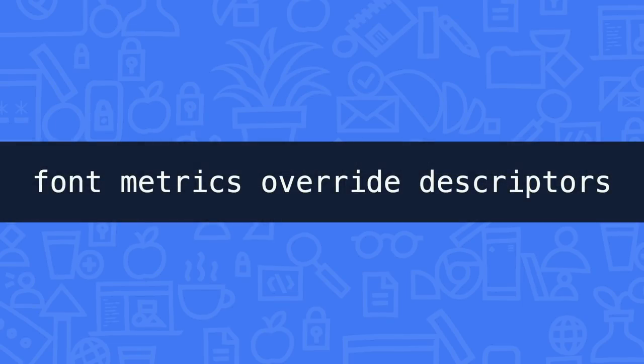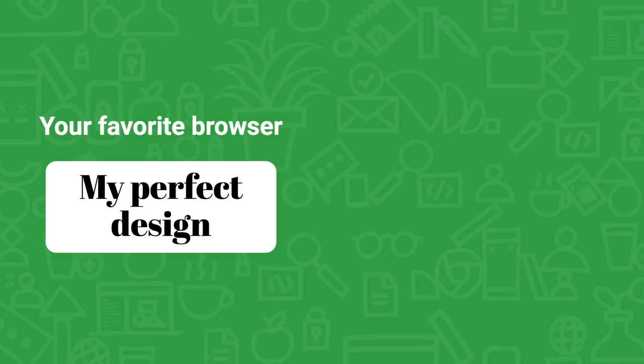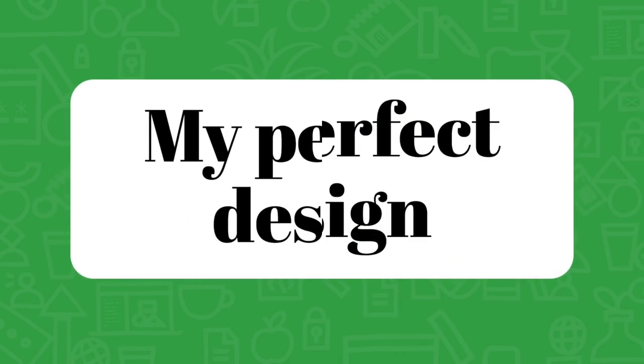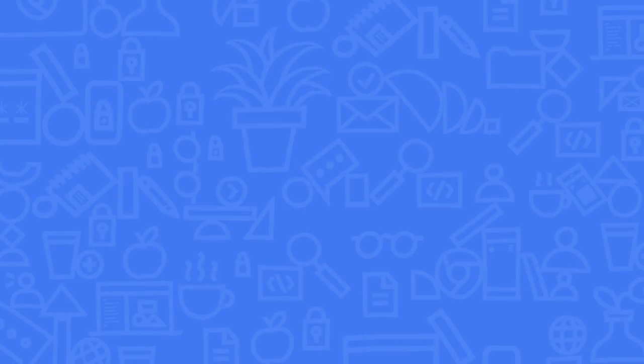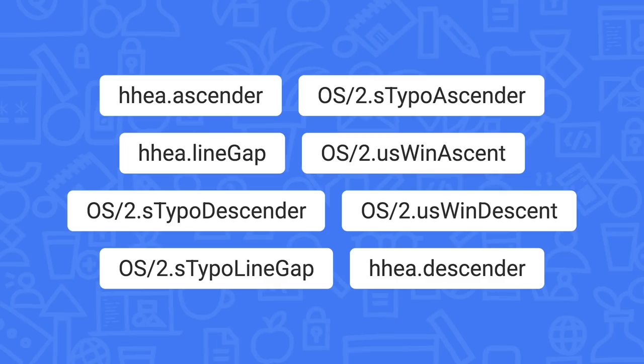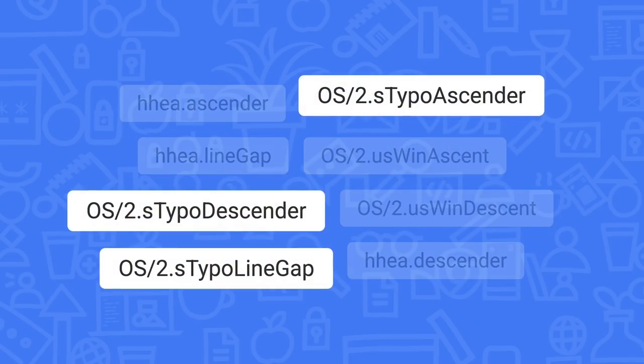Next up is the font metrics override descriptors. This CSS feature tackles a long-standing frustration when it comes to text rendering. Have you ever gotten your layout looking exactly as you want it in one browser, only to try it in another and find the text is ever so slightly misaligned? This is because font layout information can come from a variety of different places within the font itself. Some fonts use all of them but use different numbers, and sometimes browsers and operating systems disagree on which numbers to use.